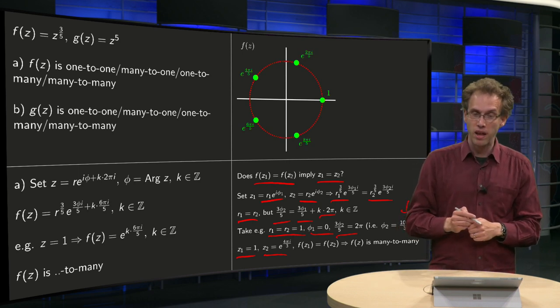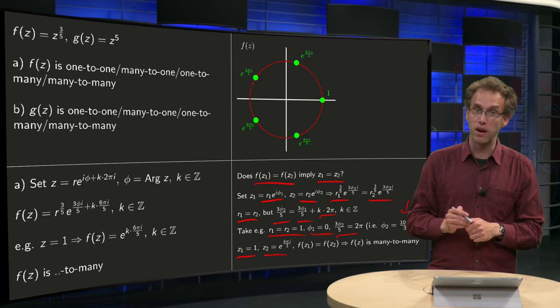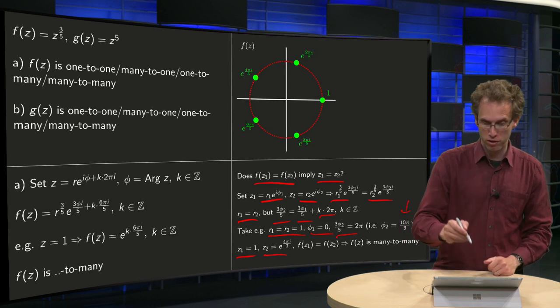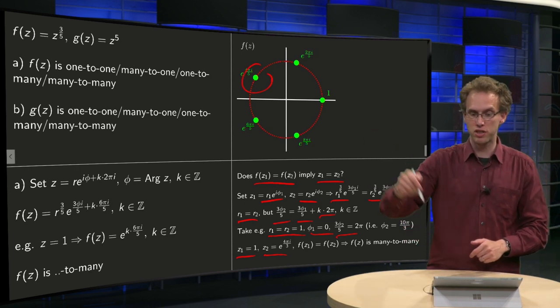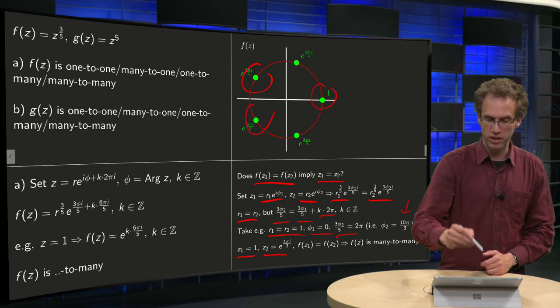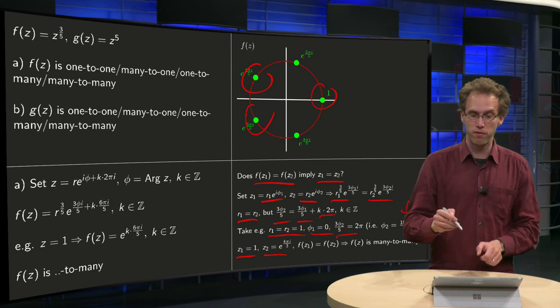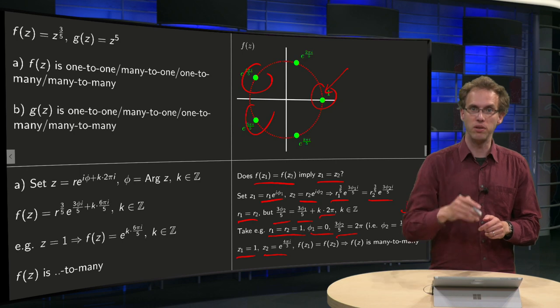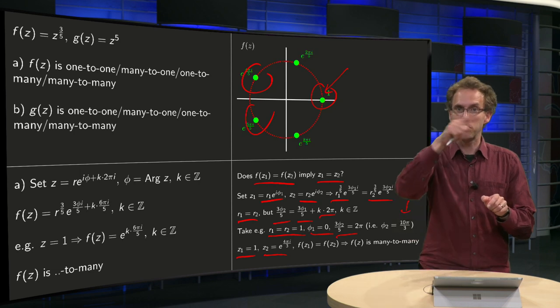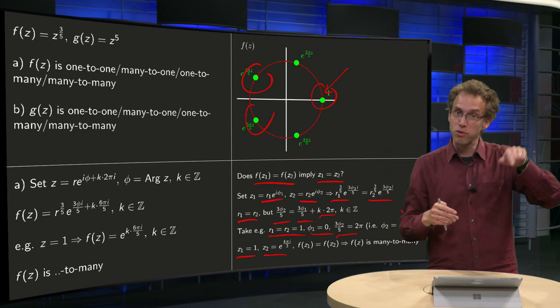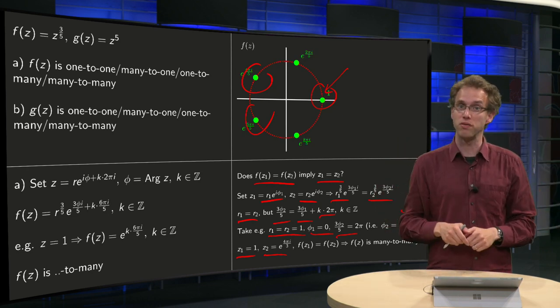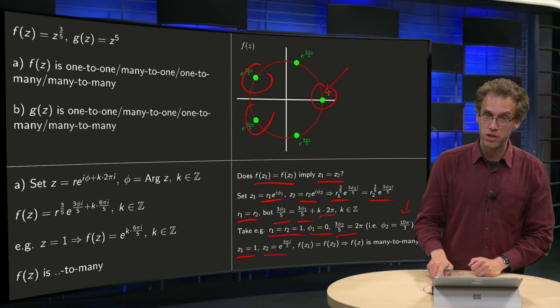So what's actually going on? e to the power of 4pi over 3 maps via the power of 3 over 5, first to this value, and then if you increase k you go on to this one and then to that one, etc. And if you start with 1 as your first value, you start at 1 and then you continue. So you are actually, with those different values in the domain, you map to the same five values but you go through them in a different order. But still, different values in the domain map to the same set of values in the codomain. So our function f is many to many.